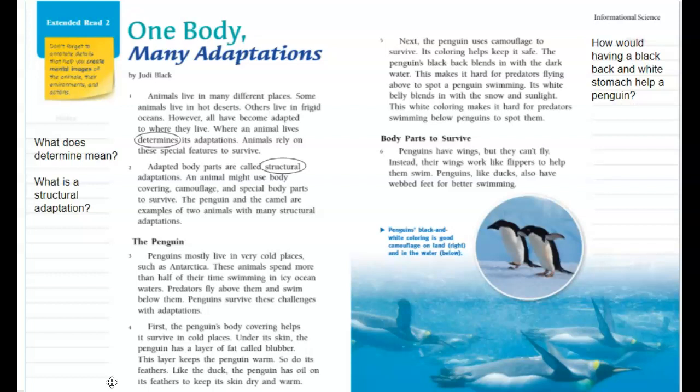I had a question here — I can't really envision this penguin swimming along because that black just seems to pop out. So my question would be: how would having a black back and white stomach help a penguin? I don't see it camouflaging. Maybe I need more examples of how this works.